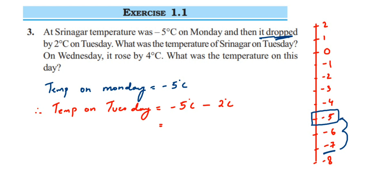Both integers have the same sign — negative. Whenever you have the same sign, you add the integers and then put that same sign. So 5 plus 2 equals 7, and the sign is negative, giving minus 7 degrees Celsius. That is the answer both on the number line and when solving algebraically.